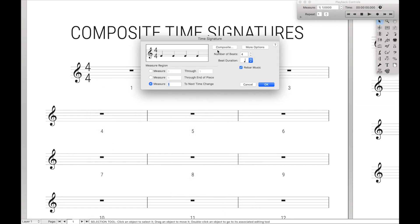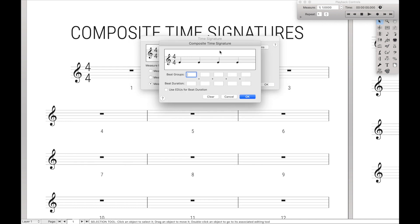So edit time signature, and then we're going to go over here, and where it says composite, this is where we're going to type in the composite time signature. So if we wanted to say 2 plus 3 plus 2 for a 7-8, we can go 2 plus 3 plus 2 over 8. And that'll give us a 7-8 that's grouped into 2s plus 3s plus 2s, and that's how it's beamed.